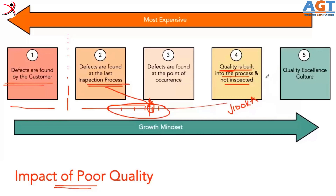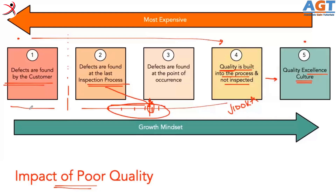The last step is quality excellence culture. Among these five scenarios, the most expensive is when the customer finds the defect. Going in the other direction, the least expensive is building quality in. The growth mindset says that the problem should be controlled as early as possible.